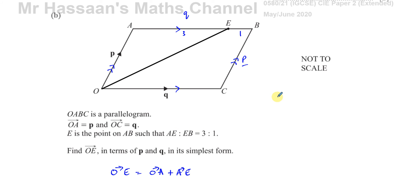Now we know that OA is vector P, we can see that. Now I know that AE is in the same direction as the vector Q, which is AB, but it's some fraction of it. What fraction is AE of AB? Well, it's 3 parts out of 4 parts in total. AB would be 4 parts, AE is 3 parts, so AE is 3 quarters of AB.